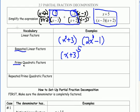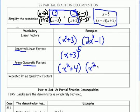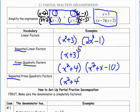Next we have prime quadratic factors. Quadratic means degree 2. A factor like x squared plus 4 is quadratic and prime because it doesn't factor — if it did, you'd end up with linear factors. Another example is x squared plus x minus 10: quadratic because of the degree 2, but it doesn't factor. Then we have repeated prime quadratic factors — like taking x squared plus 4 but repeated, say, to the third power, meaning x squared plus 4 times x squared plus 4 times x squared plus 4.